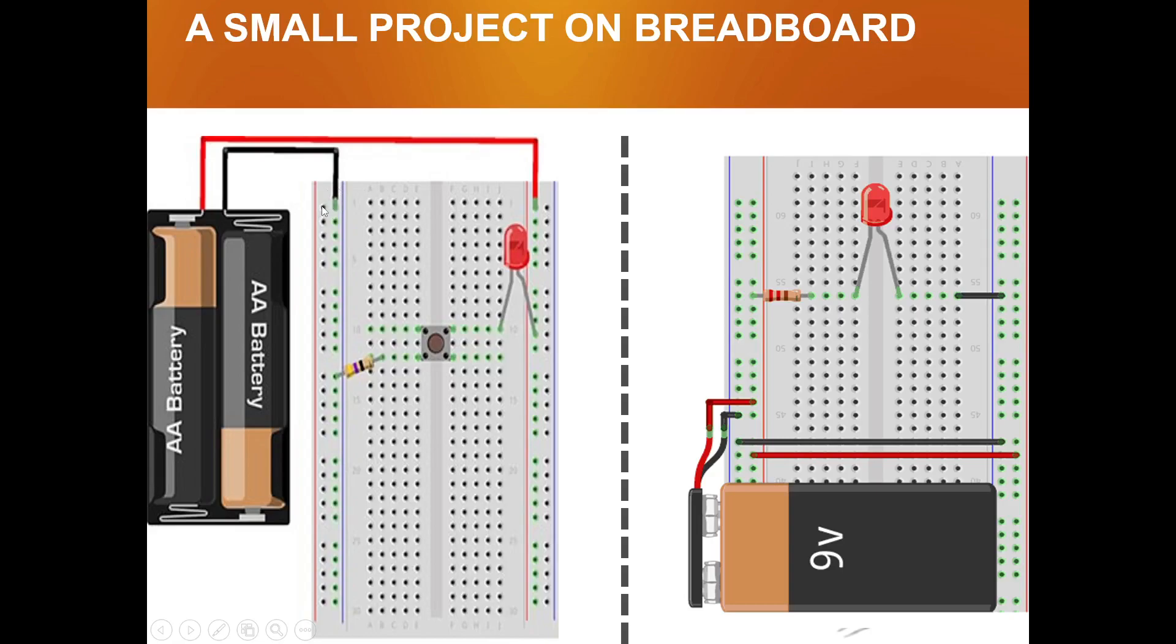It does not matter if you connect it here or here, this whole line will become positive. So you connect one bulb here and then you connect other leg here. You see this green line, as I said this green line is completely one line. So this switch has four pins: one here, one here, one here and one here. These four legs will have four pins.